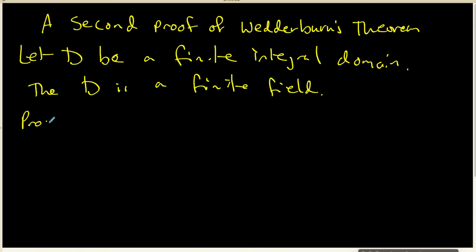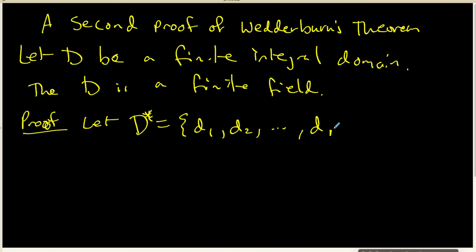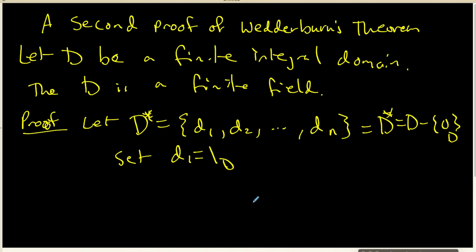The proof that we're going to look at this time starts off by simply writing the elements of D explicitly. We're going to write the elements of D* explicitly. We're going to let D* be D_1, D_2, all the way up to D_n. And we will set D_1 equal to the 1 inside our set. D* is just D take away 0 of the domain.